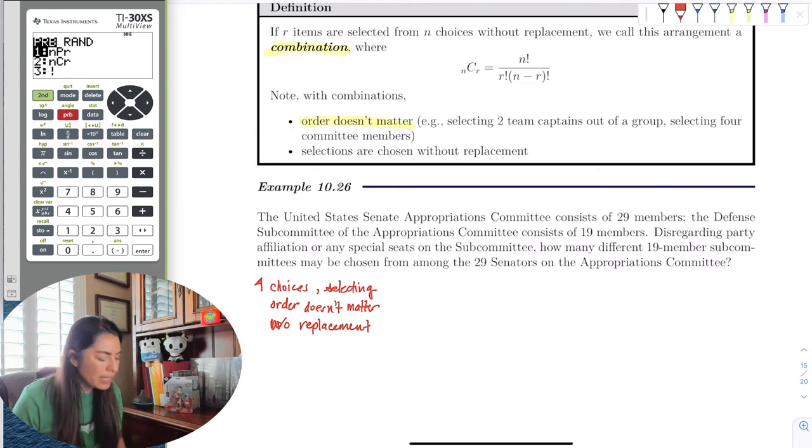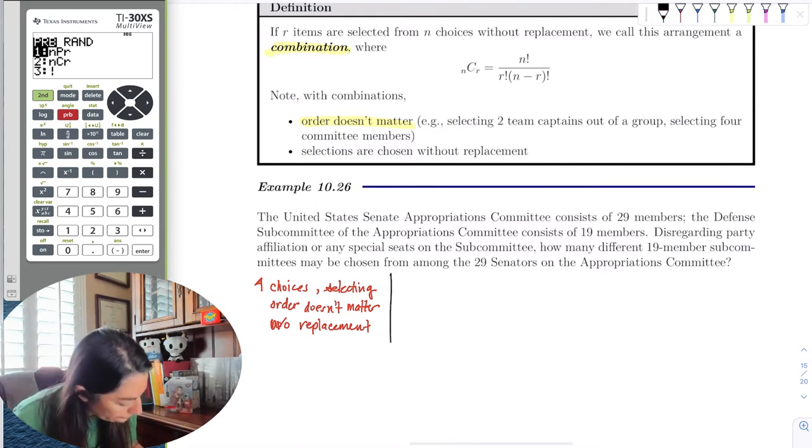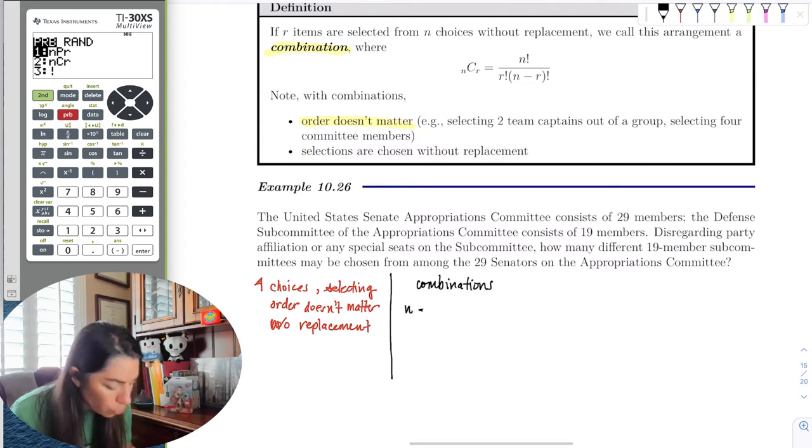Okay, once we identify I have a certain number of choices, I'm selecting so many out of the choices, and I realized it's without replacement, I ask myself, order doesn't matter? It's automatically combinations. So if it's combinations, all we have to identify is the number of choices. I notice I have 29 members to choose from and I need to select 19. Right? These are the categories.